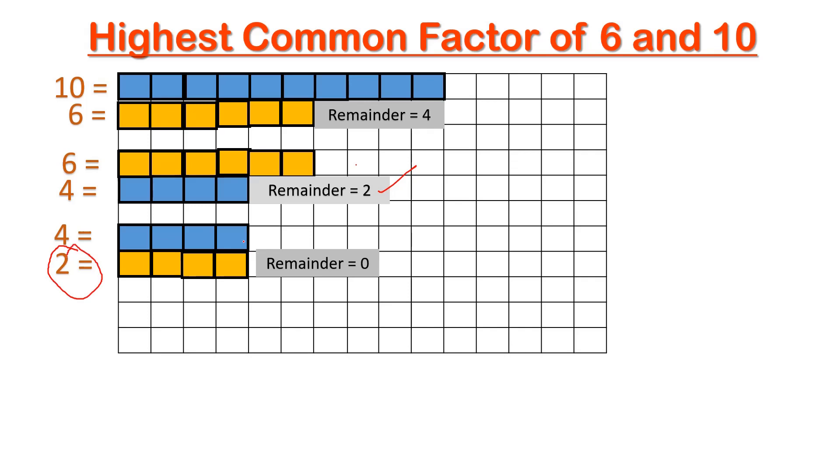Since the number which gives us a remainder as zero is 2, or we can say that here we filled this upper rectangle completely, we did not get any remainders like in the first step and second step. Therefore, we can say that the HCF of 6 and 10 is 2. So this way you can complete this activity on a four-size sheet.